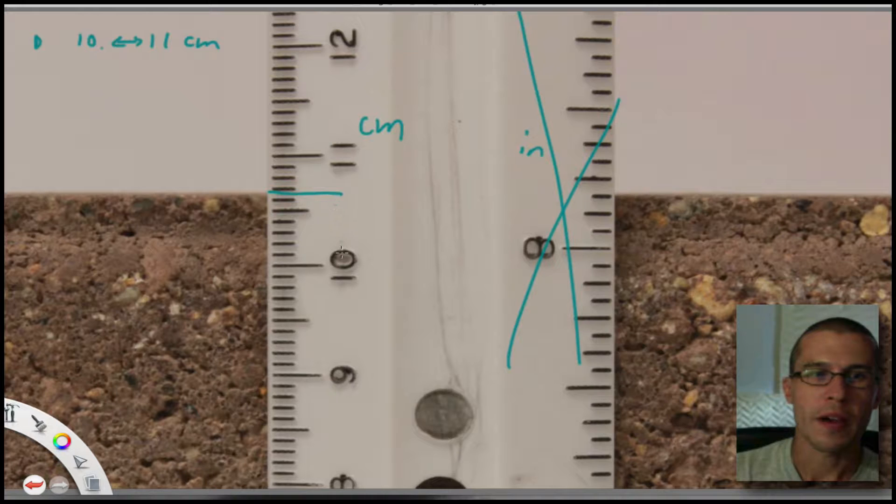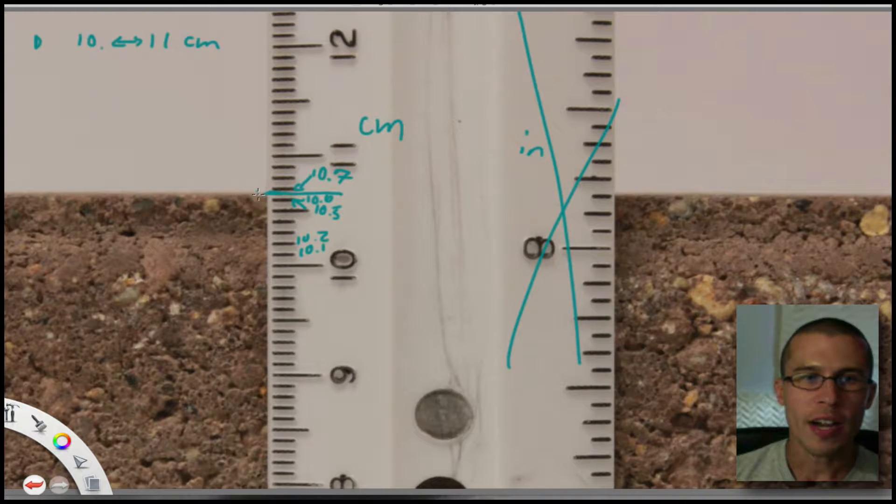So it hits right about there. But I also now have these extra tick marks in between here that show me that we can have a higher degree of accuracy here. We can say it's in between this tick mark and that tick mark, which means that since these are all tenths places, that means that this is 10.1, this is 10.2, this is 10.5, this right here is 10.6, and this is 10.7 centimeters. So this brick or this block is in between 10.6 and 10.7.